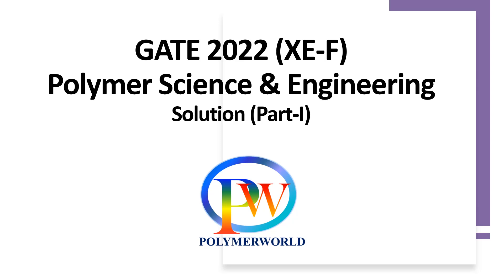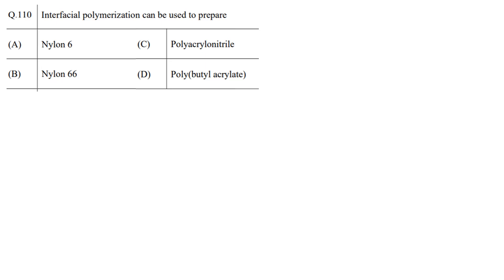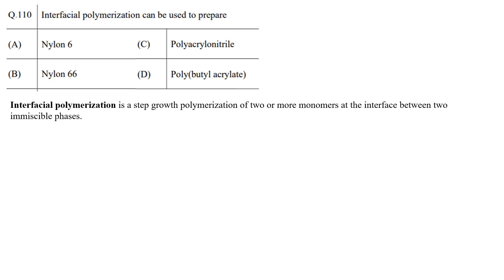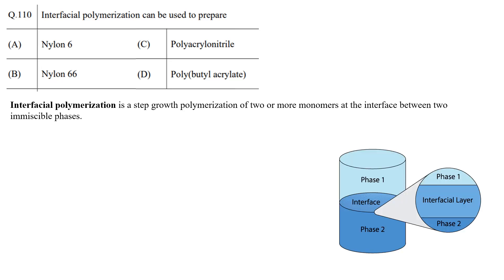The first question is: among the given options, which polymer is prepared using interfacial polymerization? Interfacial polymerization is a type of condensation polymerization in which the polymer is synthesized at the interface of an aqueous and an organic phase.